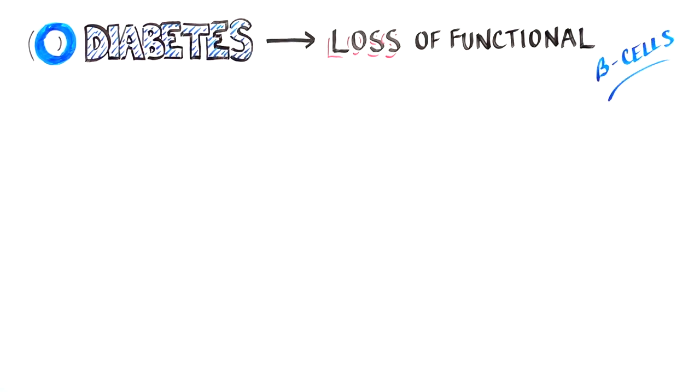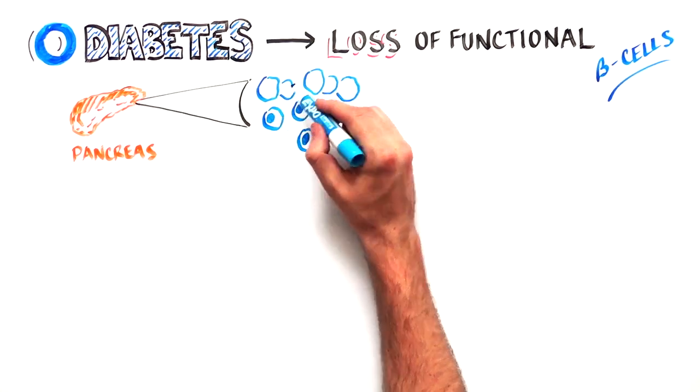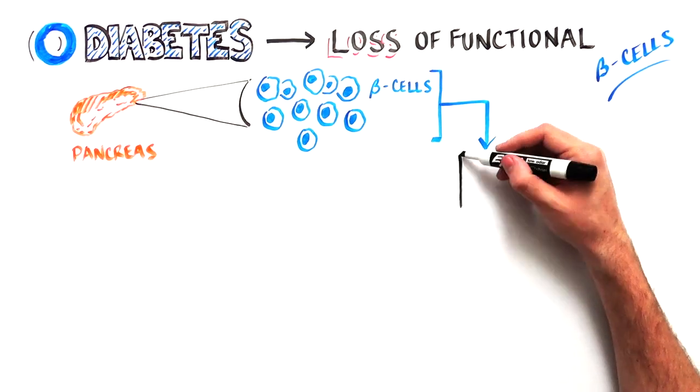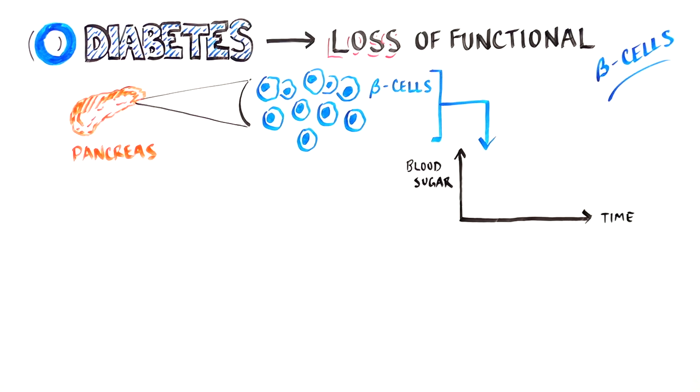Diabetes is caused by the loss of functional beta cells. Beta cells are found in the pancreas and are responsible for controlling blood sugar levels. The body needs a certain level of blood sugar to stay healthy.